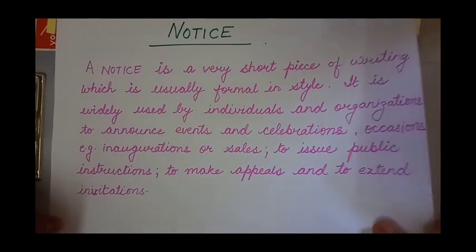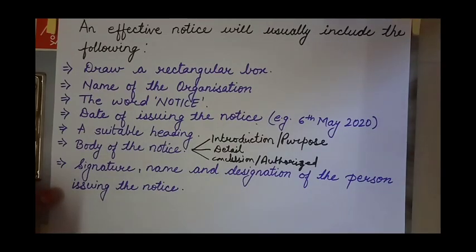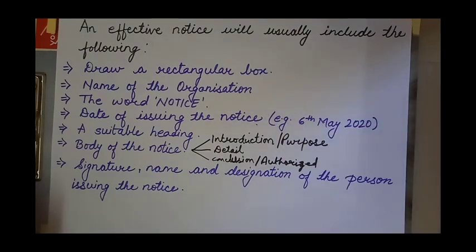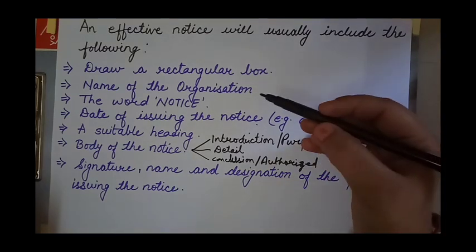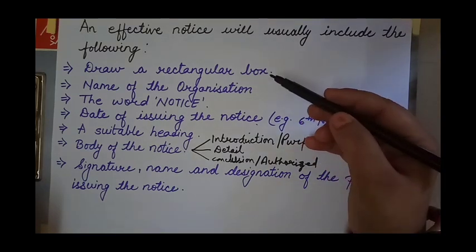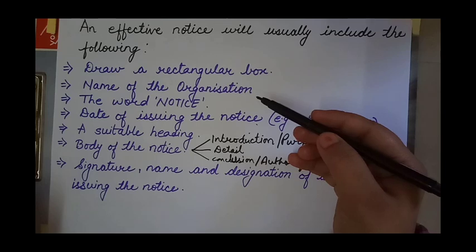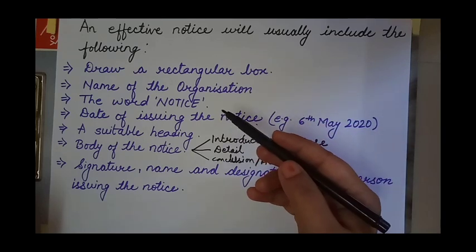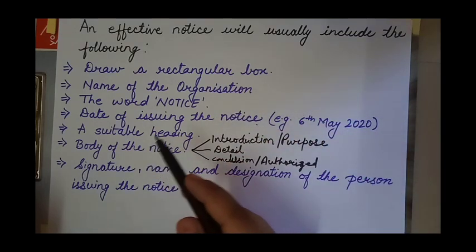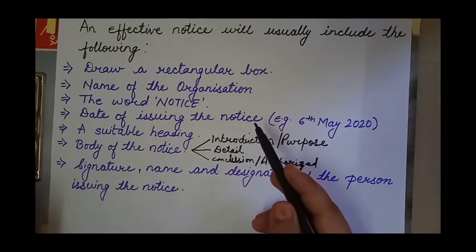Now, what are the things we need to keep in mind while writing a notice? I have written seven pointers here which you all will keep on your fingertips. First: drawing a rectangular box. Second: name of the organization. Third: the word NOTICE. Fourth: date of issuing the notice — the date on which you are writing this notice.